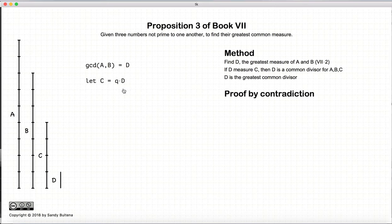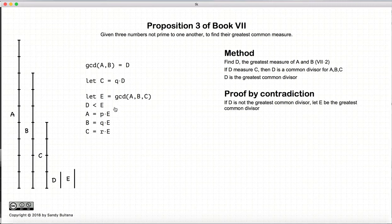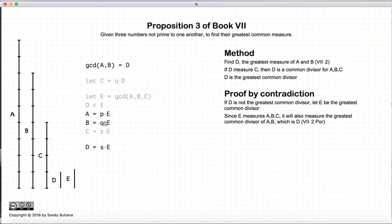So how do we prove that it's the greatest common divisor? Well, we're going to do a proof by contradiction. So let's assume that we have a greatest common divisor E of A, B, and C, and E is greater than D. So now E must measure A, B, and C. And if E measures A and B, then it must also measure D, since according to the porism in Proposition 2, if a number measures two other numbers, it also measures their greatest common divisor. So E measures D.